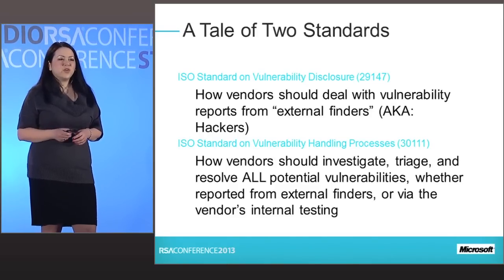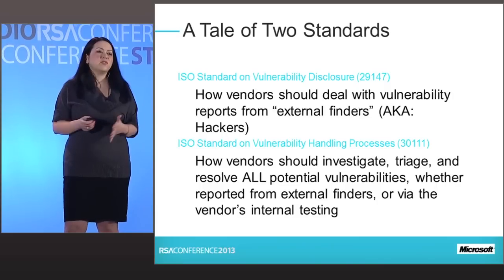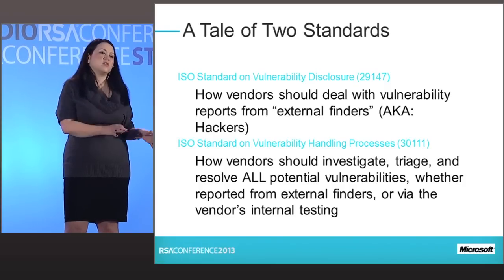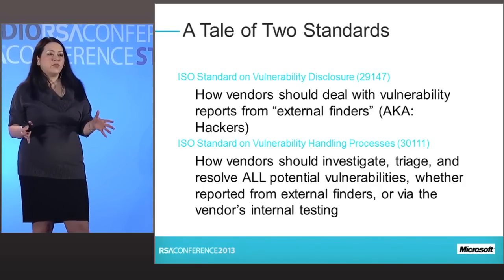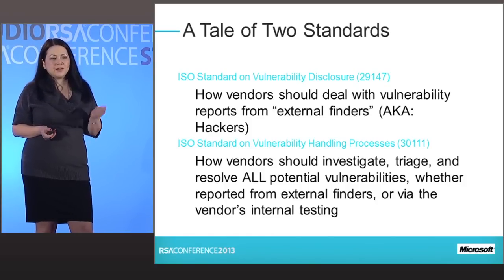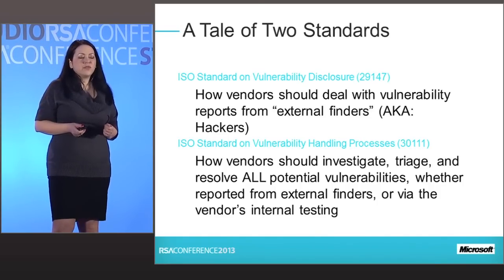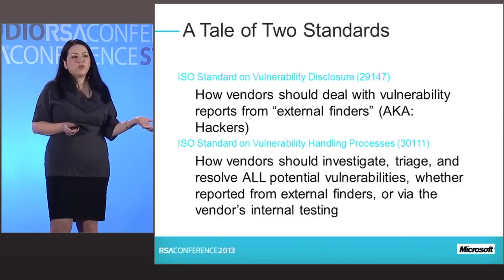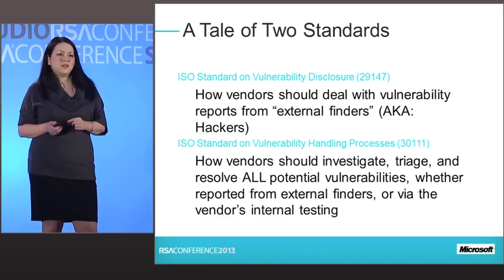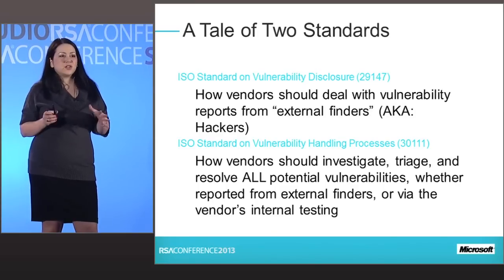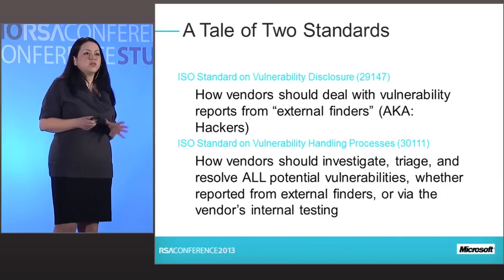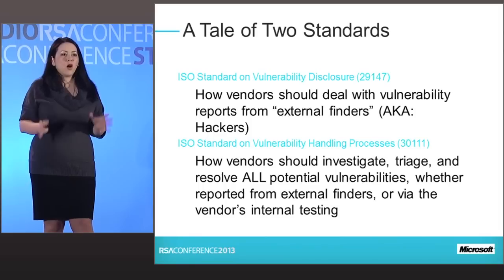Two standards for the best and worst of times. It's the best of times when a hacker comes and lets you know that there's a security vulnerability in one of your products or online services. The scope of these two standards covers both traditional box products as well as online services, and may also cover firmware in hardware. ISO 29147 on vulnerability disclosure talks about how vendors should deal with vulnerability reports from external finders, aka hackers. And then 30111, the internal process for handling vulnerability reports, covers whether the report comes from an external finder or from one of your internal testing methodologies.